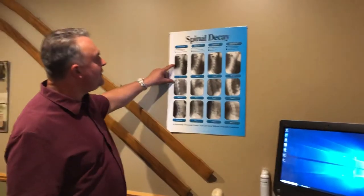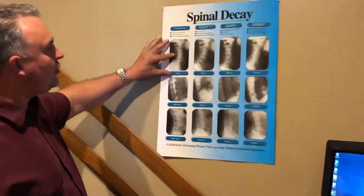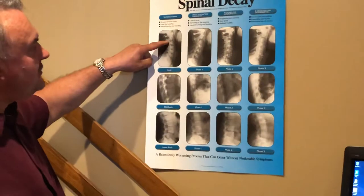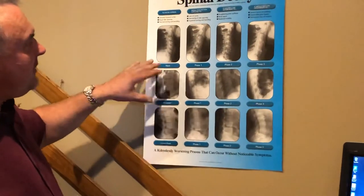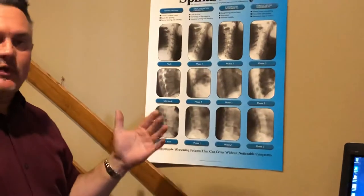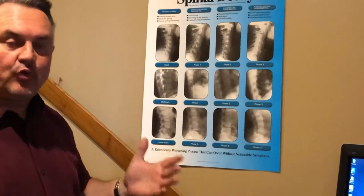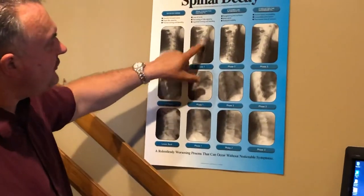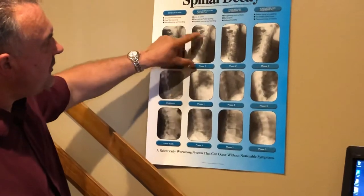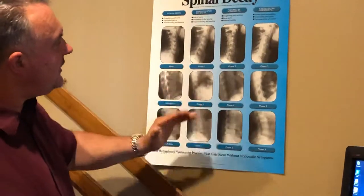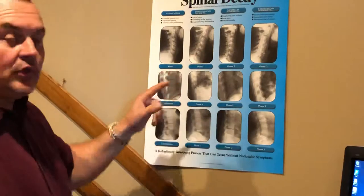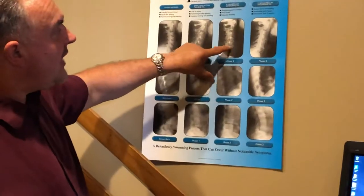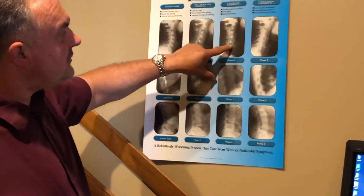Right over here in this chart, this represents a normal curve. You can see how it has that nice curve in there like it's supposed to have. Unfortunately, what ends up happening due to the type of work that you're doing — office work, poor posture, repetitious activity — you end up going to phase one, where you can see how straight the neck is. The longer that stays there, you get a second issue starting to cause osteoarthritis and degenerative joint disease.